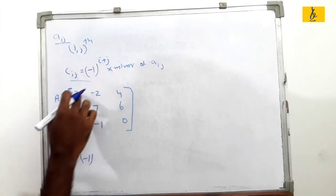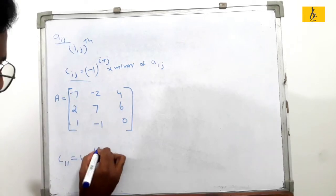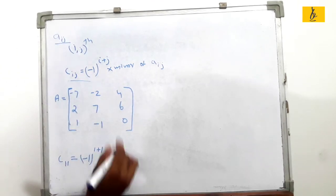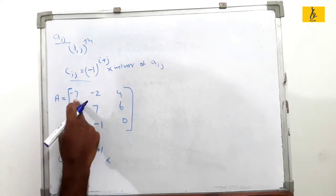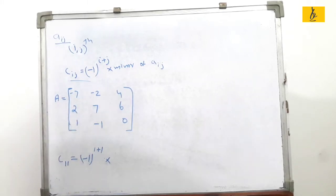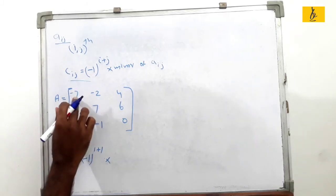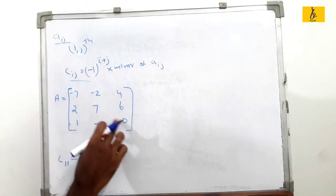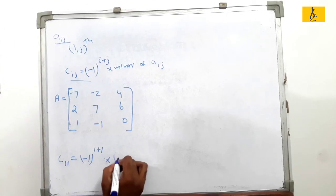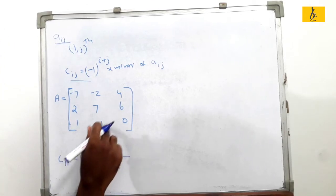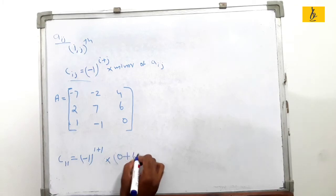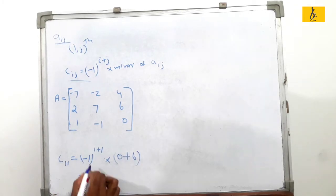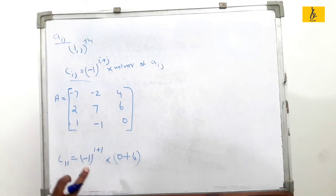For C_11, using the formula minus 1 raised to i plus j into minor of A_11: the minor is 7 into 0, minus minus 1 into 6, giving minus 6 plus 6. Then minus 1 squared is 1, so 1 into 6 equals 6. The cofactor C_11 equals 6.